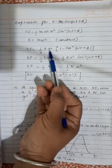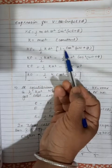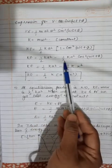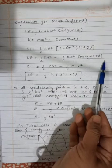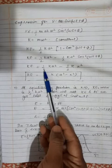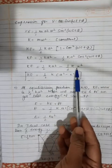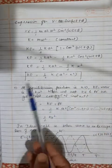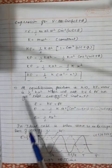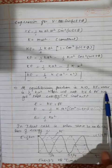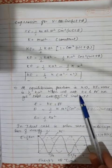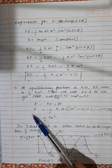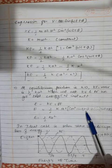Using the identity sin²θ = 1 − cos²θ: KE = (1/2)kA²[1 − cos²(ωt + φ)] = (1/2)kA² − (1/2)kA² cos²(ωt + φ). Since A² cos²(ωt + φ) = x², KE = (1/2)kA² − (1/2)kx² = (1/2)k(A² − x²). At equilibrium x = 0, kinetic energy is maximum: KE_max = (1/2)kA². Total energy E = KE + PE = (1/2)kA²[cos²(ωt + φ) + sin²(ωt + φ)].